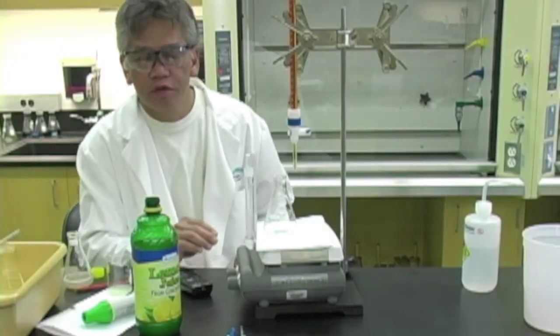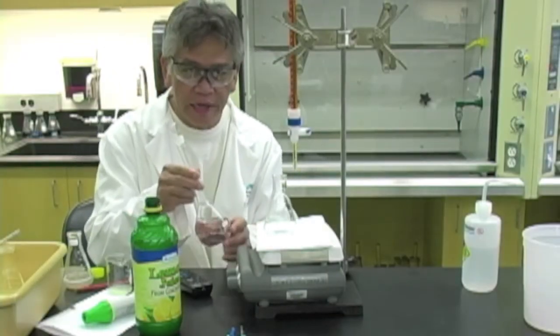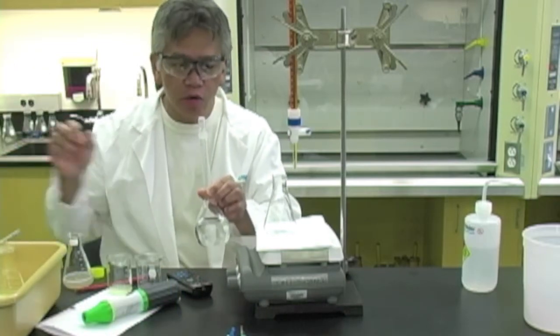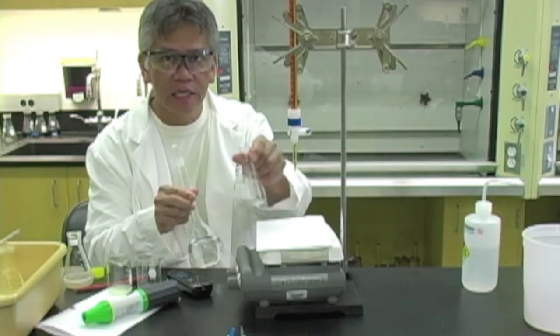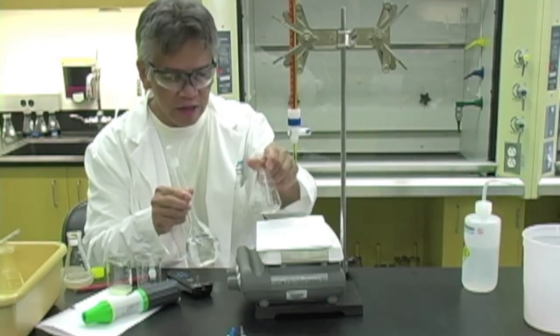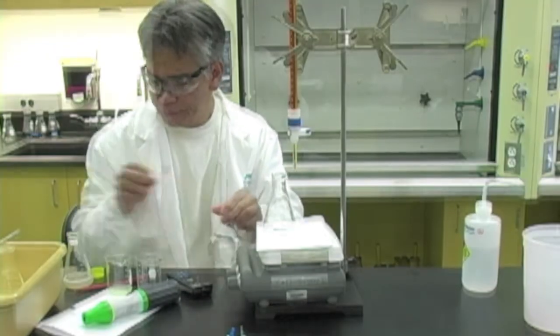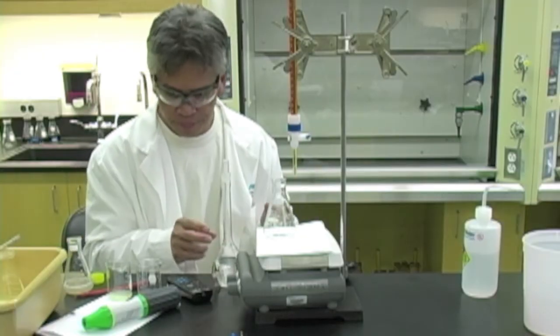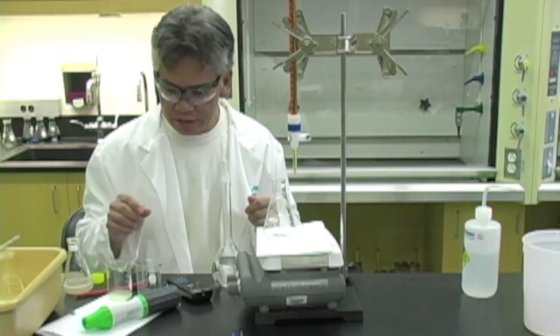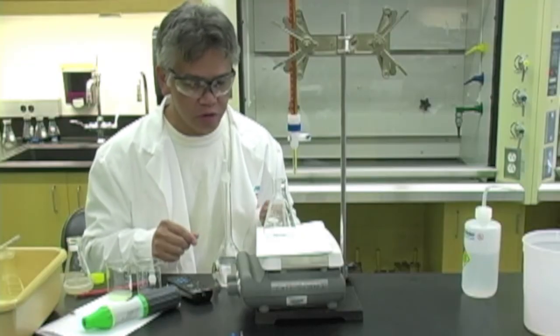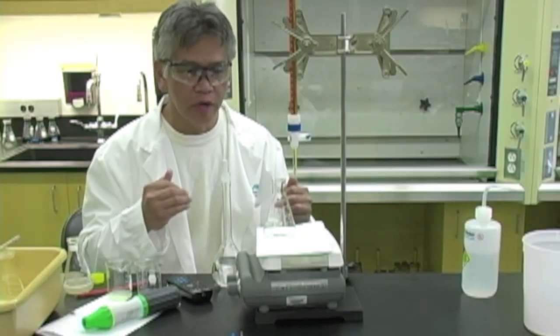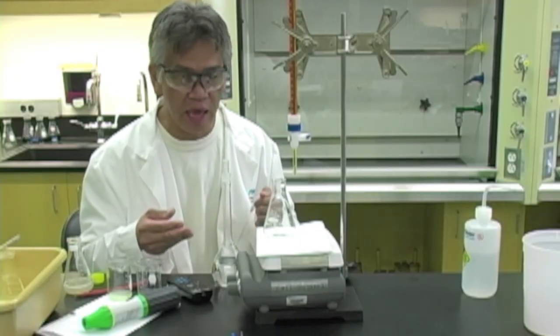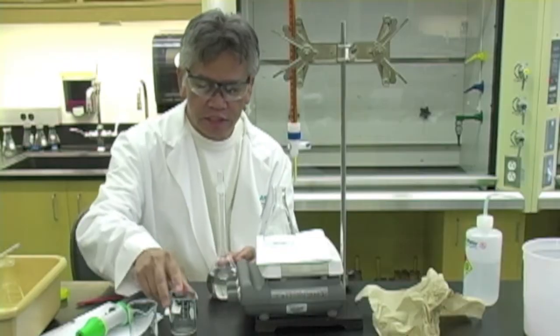So next I'm going to analyze my unknown. I'm going to do that by taking a 20 ml aliquot, placing it in this Erlenmeyer flask, adding starch solution, and then titrating it to the endpoint. For this particular sample, I'm going to again do a pre-trial titration to see what the endpoint looks like.